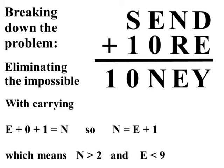Now, we have already used 0 and 1. So, the smallest E can be is 2. And since N is E plus 1, N has to be greater than 2, at least 3. On the other side the biggest N can be is 9. The biggest any digit can be is 9. So, that means E has to be less than 9 or at most 8.